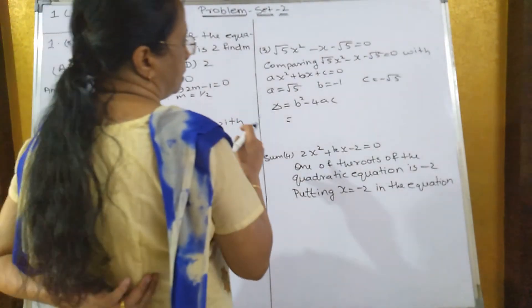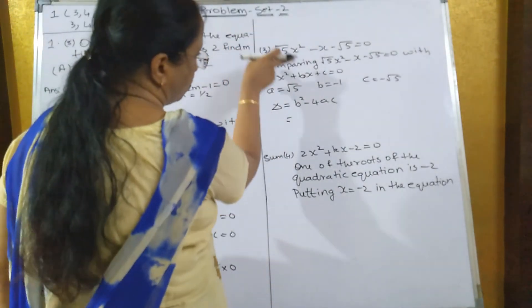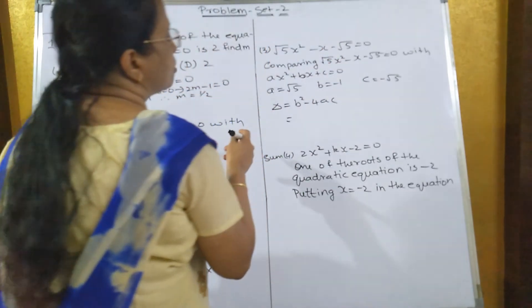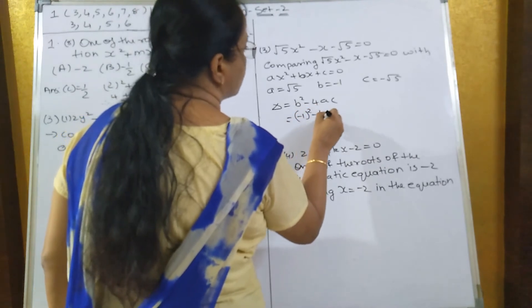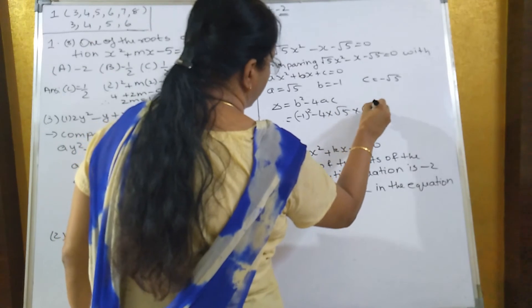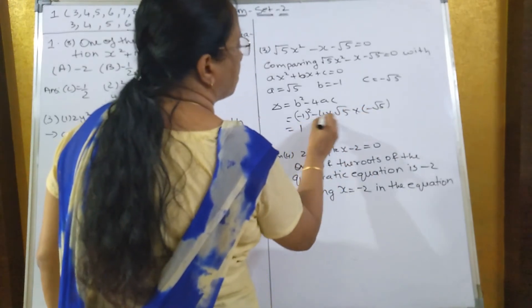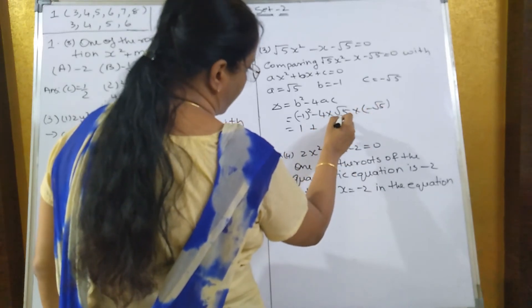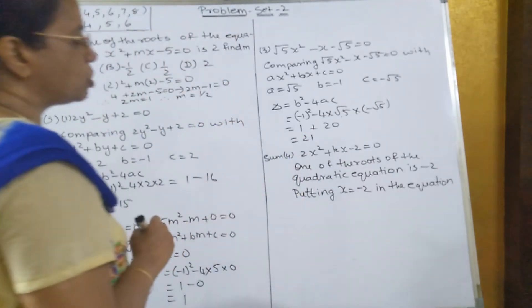Now comparing this equation with ax² + bx + c = 0: a = √5, b = -1, c = -√5. So b² - 4ac: (-1)² - 4×√5×(-√5) = 1 + (minus times minus) 4×5 = 1 + 20 = 21. The value of the discriminant is 21.